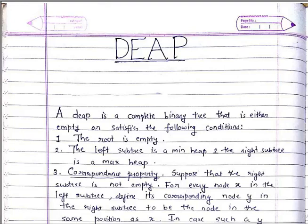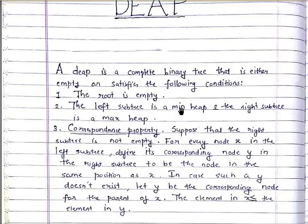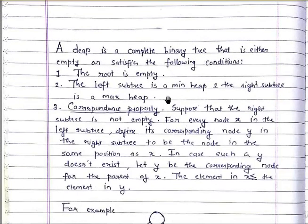Welcome to your advanced data structure tutorial. Today we'll be learning about the DEAP. A DEAP is a complete binary tree that is either empty or satisfies the following conditions. The first condition is the root is empty, so a DEAP always has an empty root. The second condition is the left subtree is a min-heap and the right subtree is a max-heap.